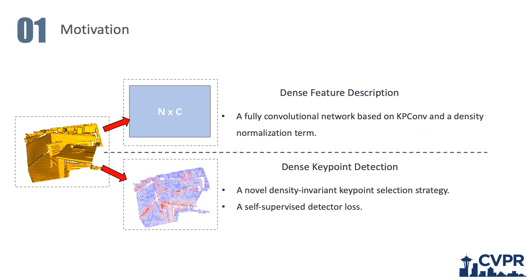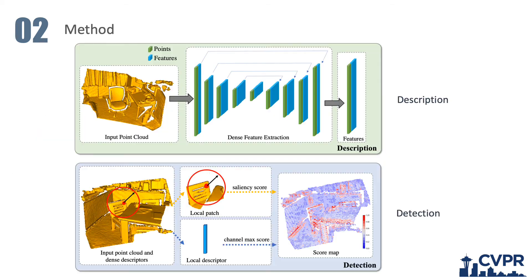So in this paper, we seek a joint learning framework that is able to not only predict key points densely, but also tightly couple the detector with a descriptor. The proposed method follows a detect-and-describe approach from the 2D image matching area, which uses a single network for both description and detection.